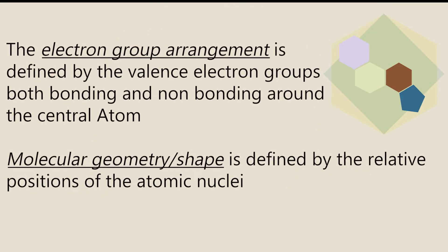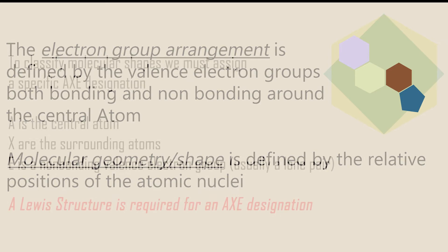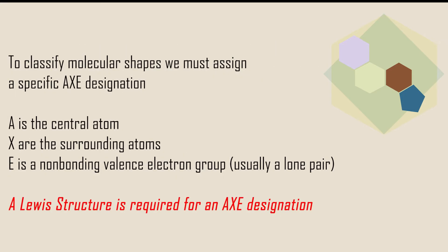The electron group arrangement is defined by the valence electron groups, both bonding and non-bonding, around the central atom. The molecular shape, on the other hand, is defined by the relative positions of the atomic nuclei. To classify molecular shapes, we must assign a specific AXE designation. A is the central atom, X represents the surrounding atoms, and E is a non-bonding valence electron group, usually a lone pair. A Lewis structure is required for an AXE designation.